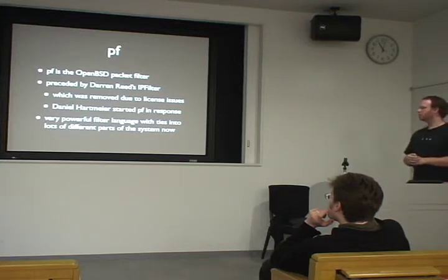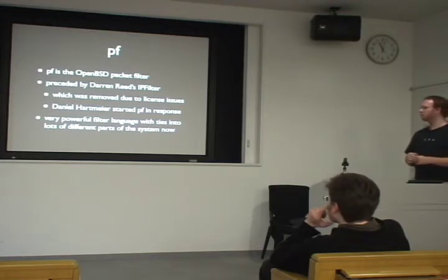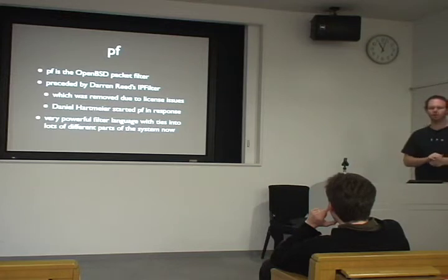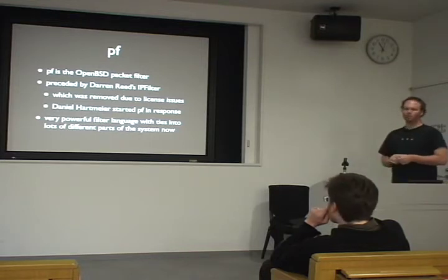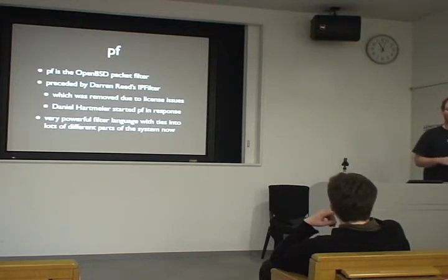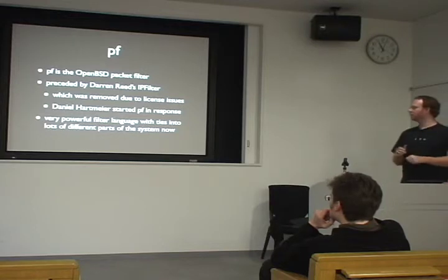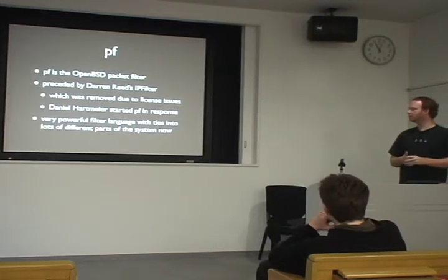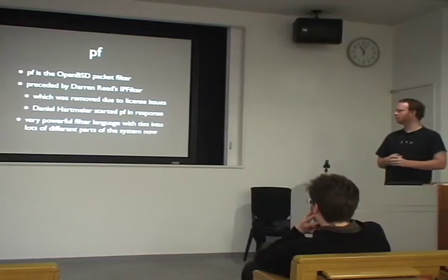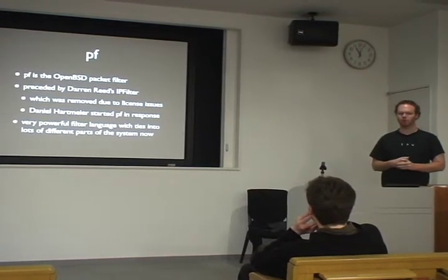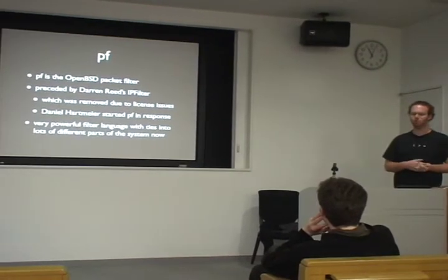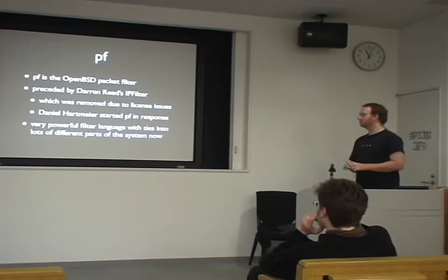We used to have Darren Reed's IP filter. However, there was a clarification made to the terms of the license which caused it to be removed from the source tree. That was actually pretty shocking to me, because the main reason I used OpenBSD all that time ago was to NAT my internet connection at home, and all of a sudden I couldn't do it. Fortunately, a guy called Daniel Hartmeyer came along and started PF, and it was amazing to watch how fast it started up.